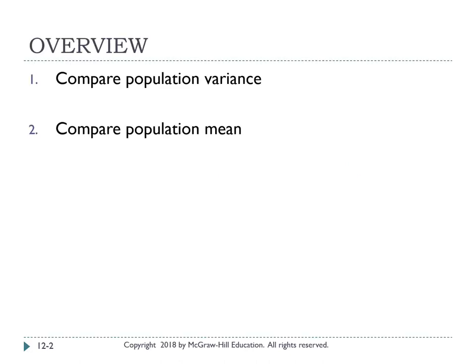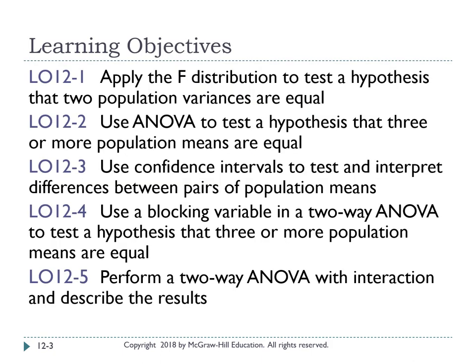We will learn two things in this chapter: first, we will compare population variance, or sigma squared, and second, we will compare population mean, or mu. Three learning objectives will be covered. First, you can apply the F distribution to test a hypothesis that two population variances are equal. Second, you should be able to use ANOVA to test a hypothesis that three or more population means are equal. And last, you can use confidence intervals to test and interpret differences between pairs of population means.